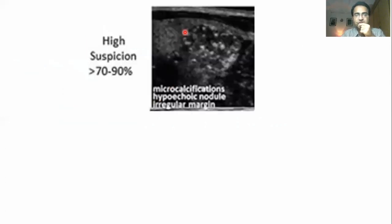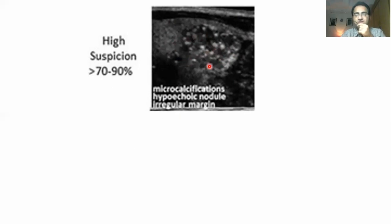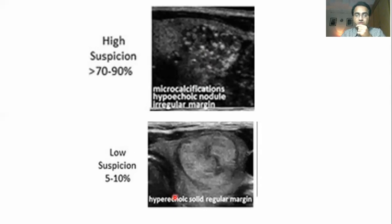A hypo-echoic means a black, dark-colored mass which is actually solid and most probably a tumor — it is a malignant feature. Looking at this picture, this part shows the normal thyroid gland, and this part is the nodule. These white spots are micro-calcifications. The lighter part is the normal thyroid gland, and these dark shadows are the hypo-echoic region — this part is very solid, giving a hypo-echoic dark color on ultrasound, and it has irregular margins.